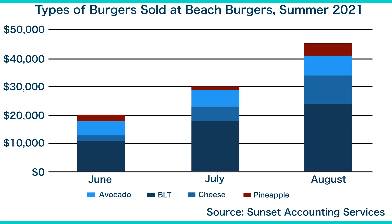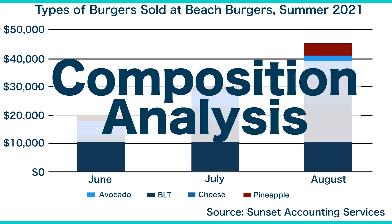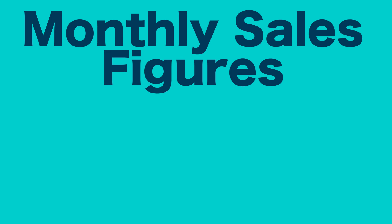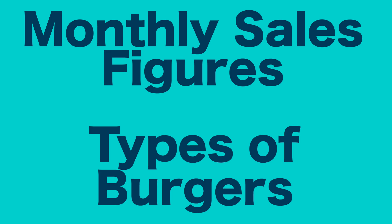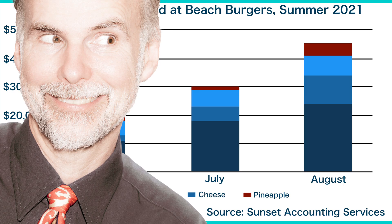In summary, a stacked column chart is perfect for a composition analysis that shows the relationship between a total value and its component parts. In the case of Beach Burgers, the relationship of interest is between the monthly sales figures and the different types of burgers sold. You can also format a stacked column chart to make your point even more clear.